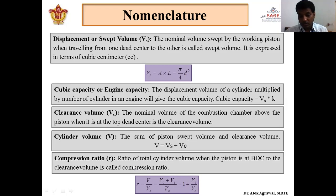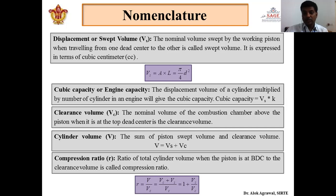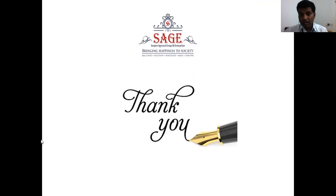The efficiency of the engine mainly depends upon the compression ratio. So this is the nomenclature — the various important terms associated with our IC engine that we need to keep in mind and use throughout the course. In today's class we have seen the basic engine components and the various nomenclature associated with them. In the next class we will start with the working of IC engine. Thank you.